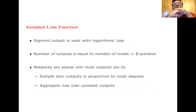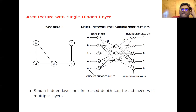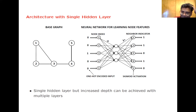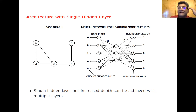You create a sigmoid output with logarithmic loss. Each of the five outputs has a sigmoid activation function in the output layer, giving you a probability value, and you use a log loss corresponding to that probability. If the ground truth output is one, you want the probability to be high; if the output is zero, you want the probability to be low. The log loss handles that.